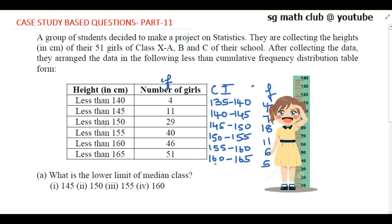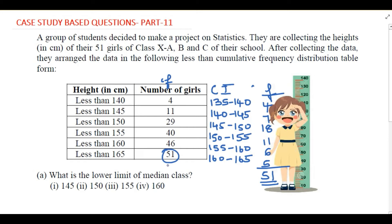Now we will solve the questions. We have the class interval and the frequency; the given values were the cumulative frequency. First, we need to find the lower limit of the median class. The total frequency is 51 — when you add all frequencies you get 51, and the cumulative frequency also confirms 51.